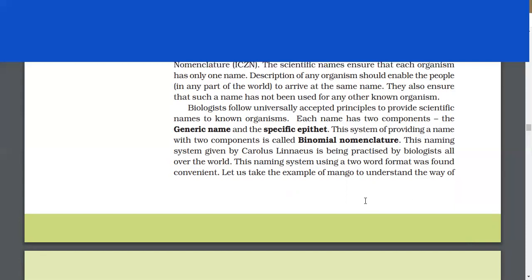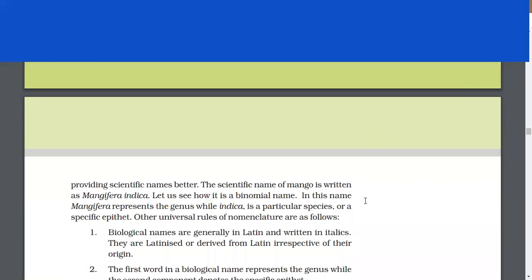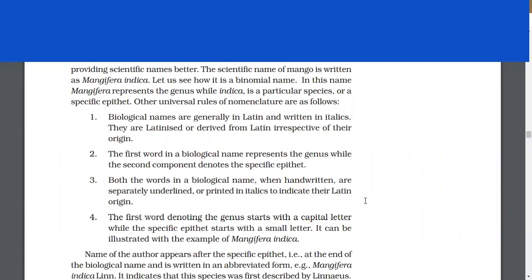Let us take the example of mango. The scientific name of mango is written as Mangifera indica. In this name, Mangifera represents the genus, while indica is the specific epithet. Other universal rules of nomenclature are as follows.